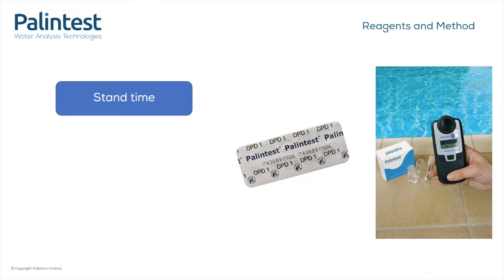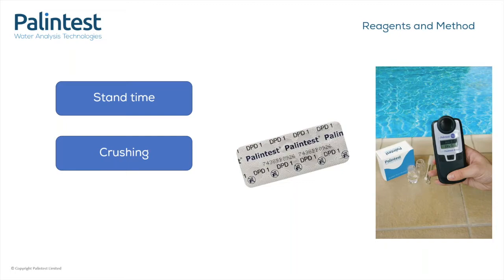On the larger photometers, there is a timer option you can use, although a stopwatch or phone app would work just as well. Another thing to consider is crushing. The crush rods have a teardrop shape to the end that can be used to break the tablet up initially without having to put too much pressure on the tube wall. For example, it's important to ensure that the tablet is fully crushed as this releases the chemicals from the tablet into the sample and allows the reaction to take place. Any uncrushed tablet will affect the reading, so it's important to both crush and mix effectively.